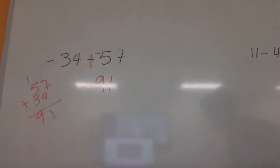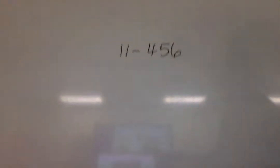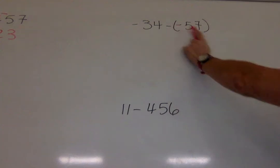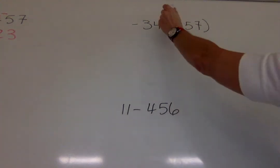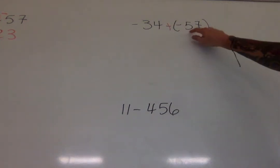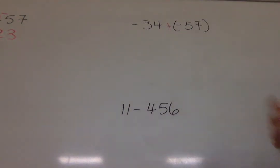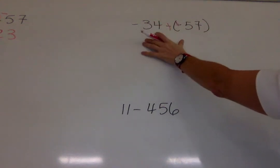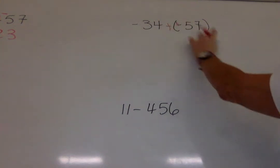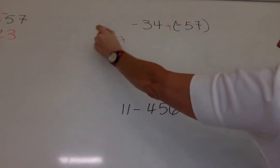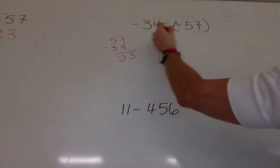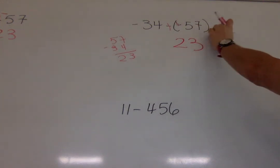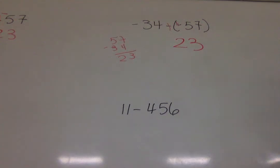Moving along. We have negative 34 minus a negative 57. First step, change subtraction to plus. So now I have negative 57. I have to make the opposite of negative 57, so I'm just going to make that a plus sign too, because now it's positive 57. We're ready to add. And now the signs are different. And so I have 57 minus 34, which is 23. And this time, the number with the largest absolute value is 57, and it's positive. So this is going to be positive 23.